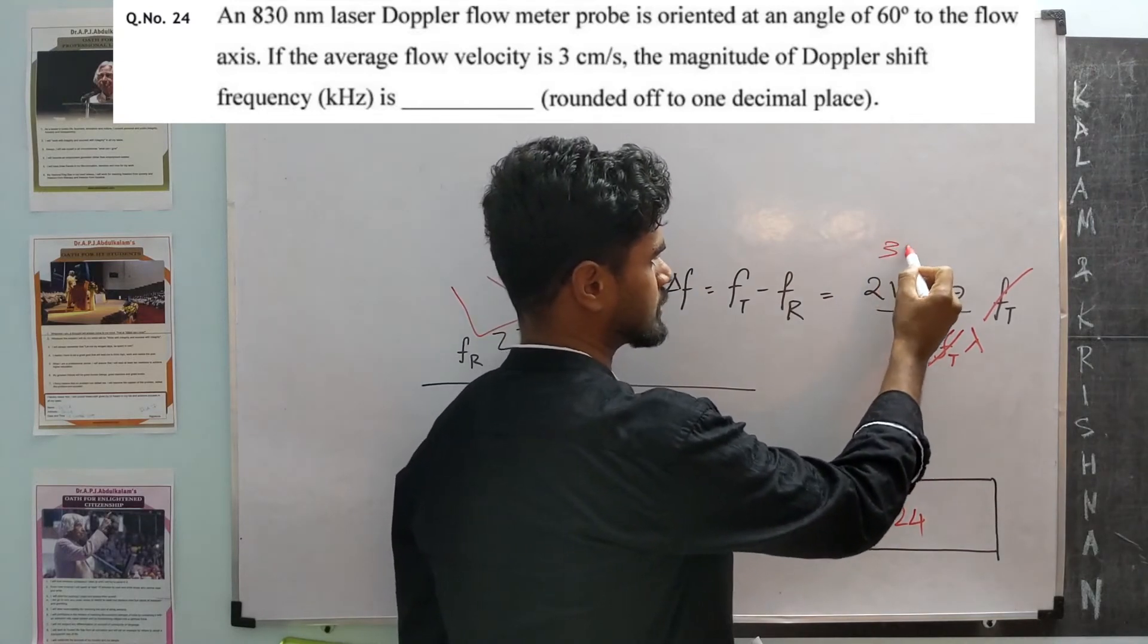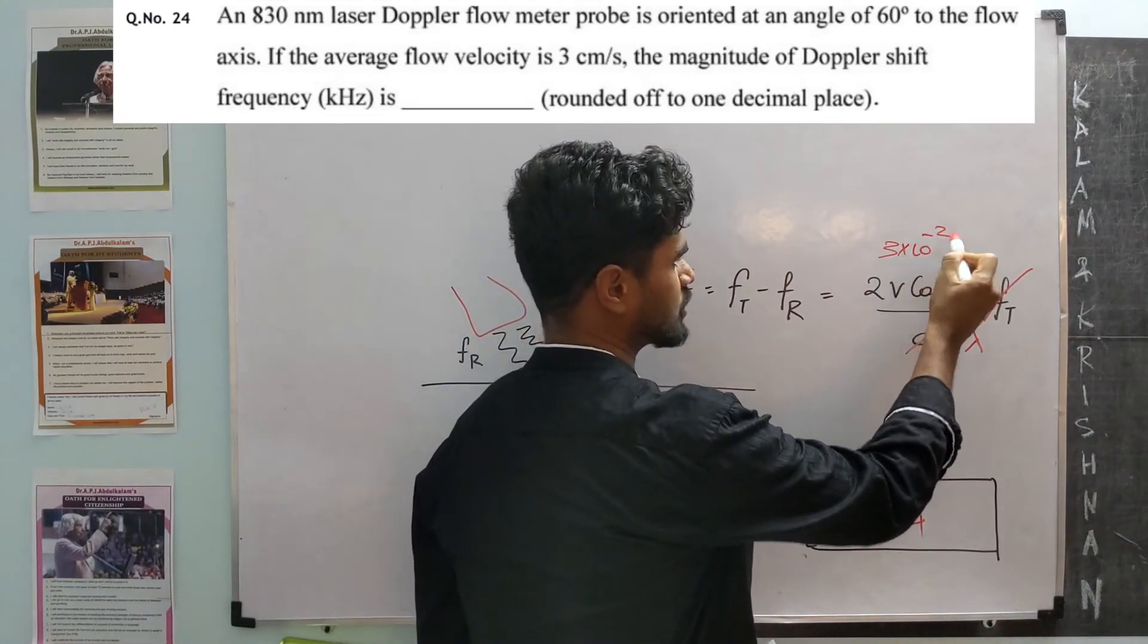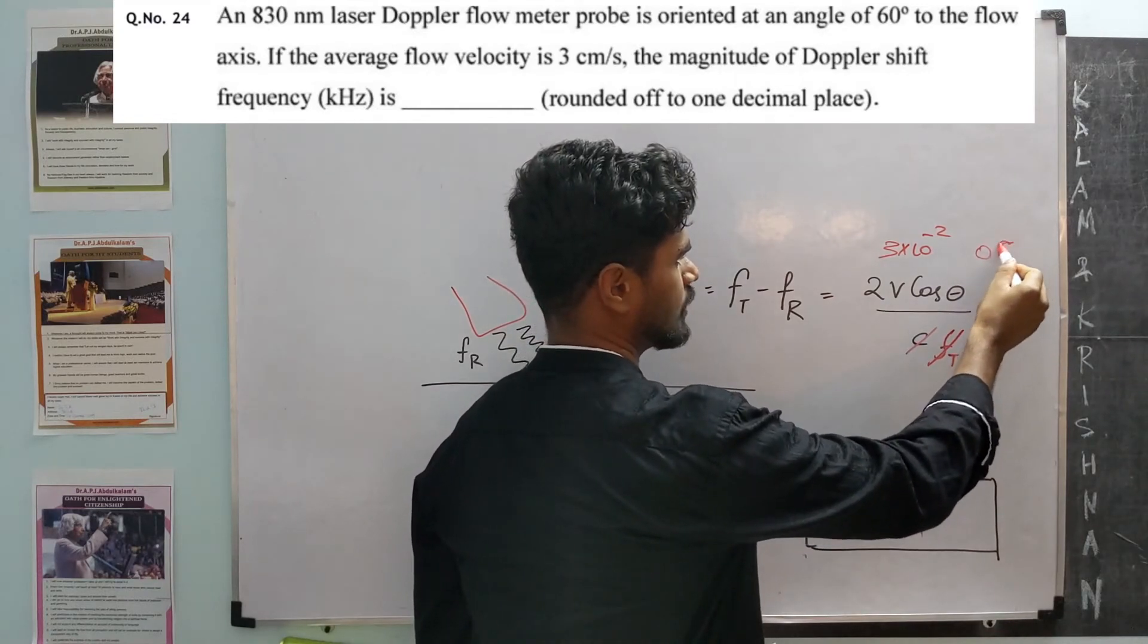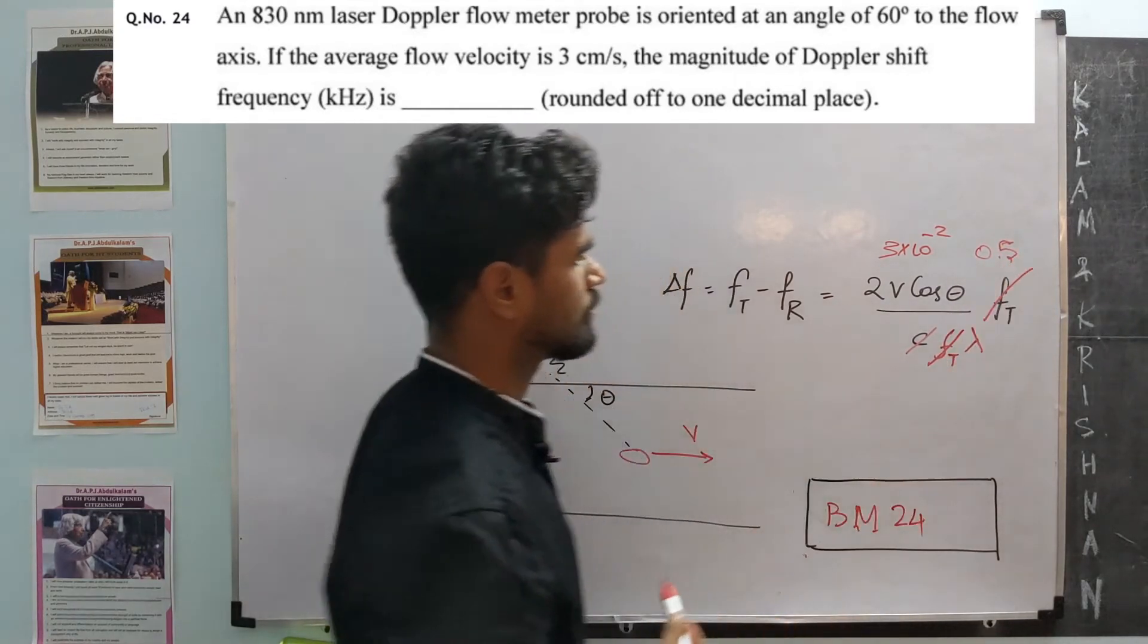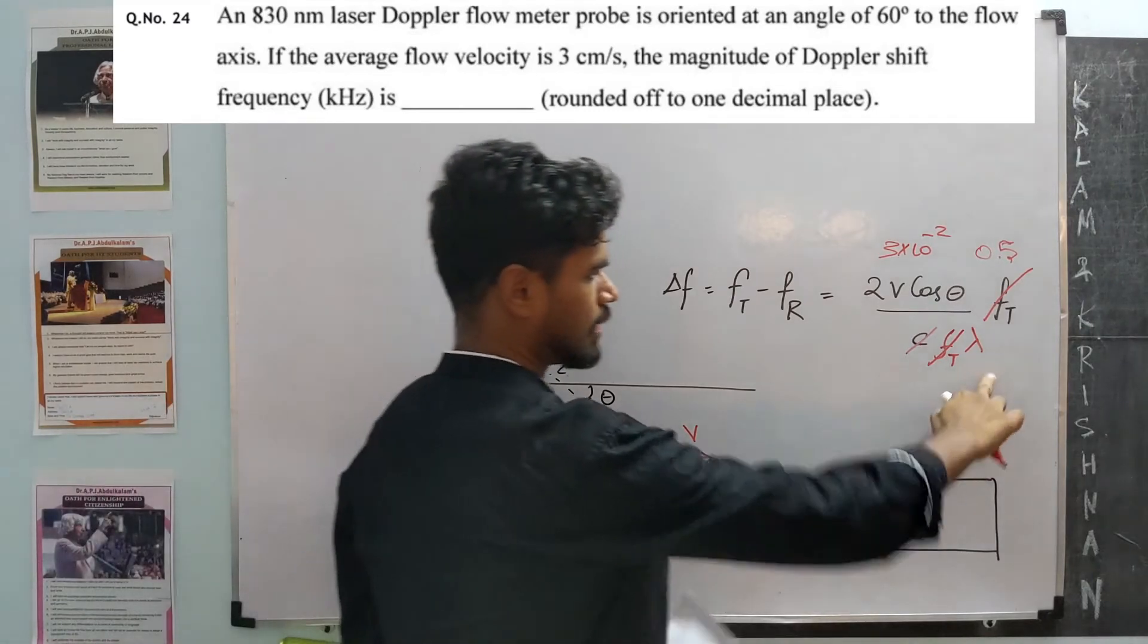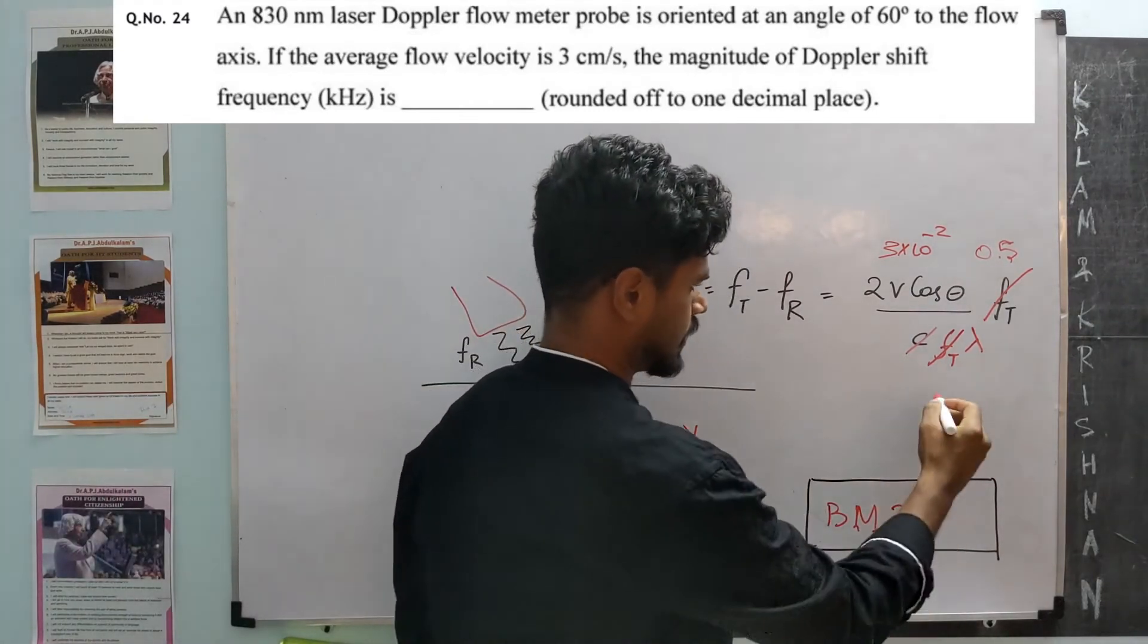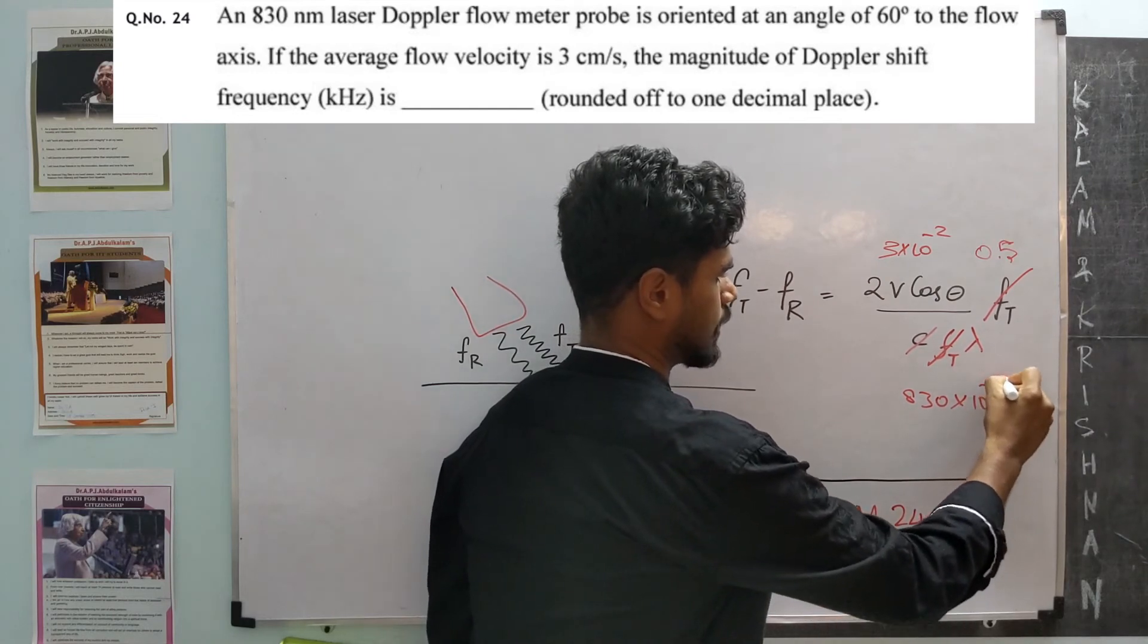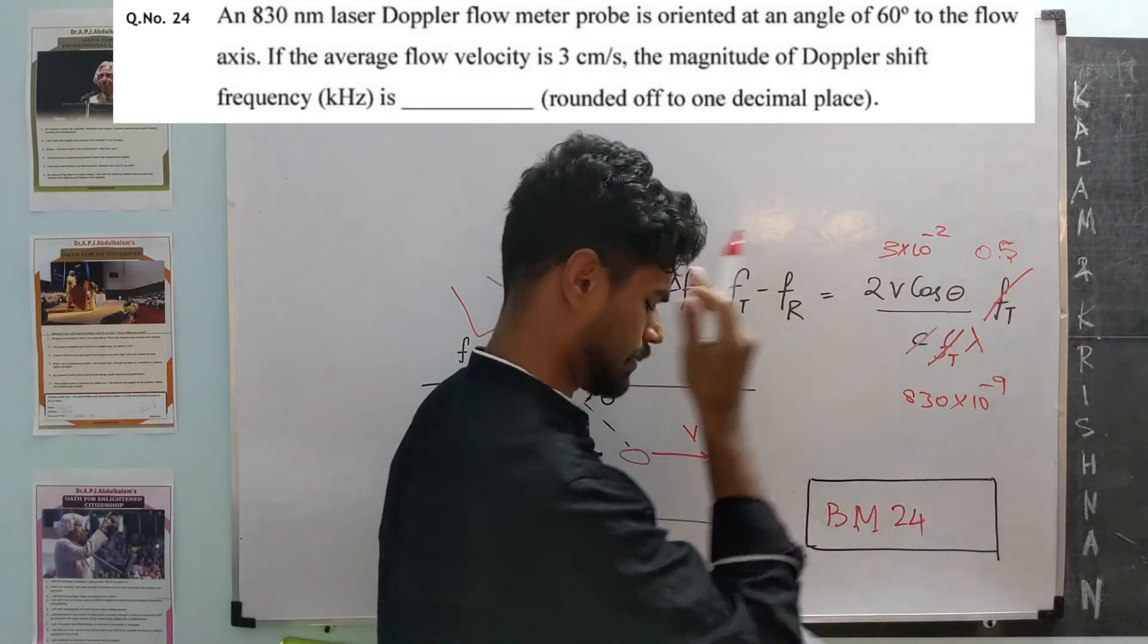We know v, v is 3 centimeters per second, so 3 times 10 to the power minus 2. Cos theta is 0.5, cos 60 is 0.5. Finally, lambda is 830 times 10 to the power minus 9 meters.